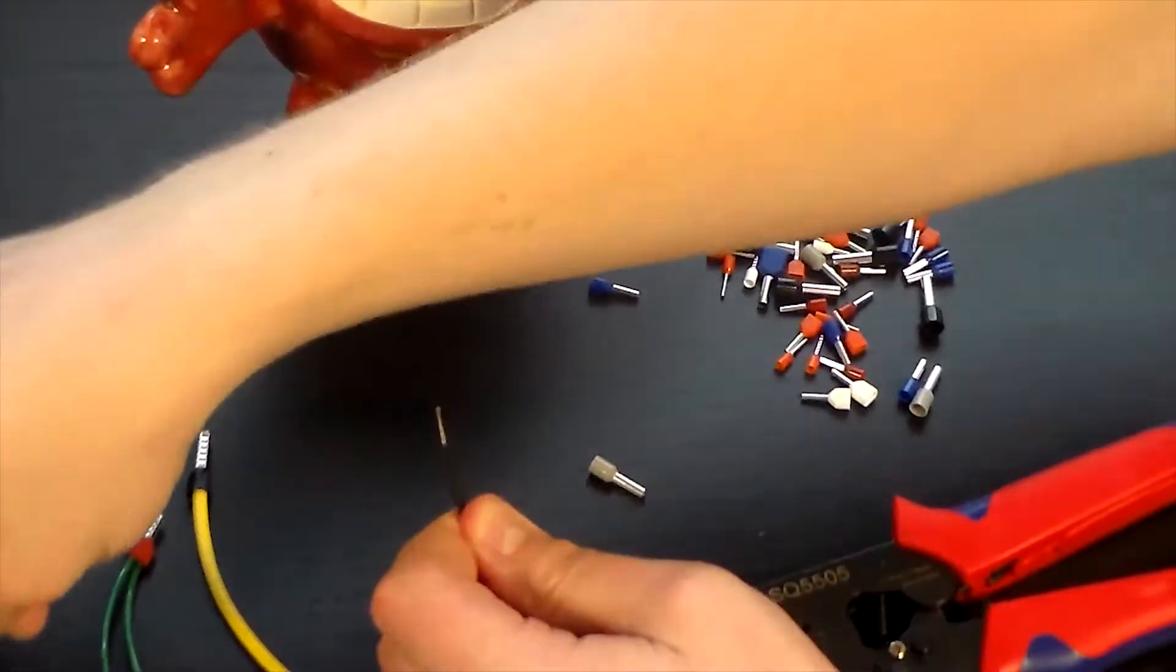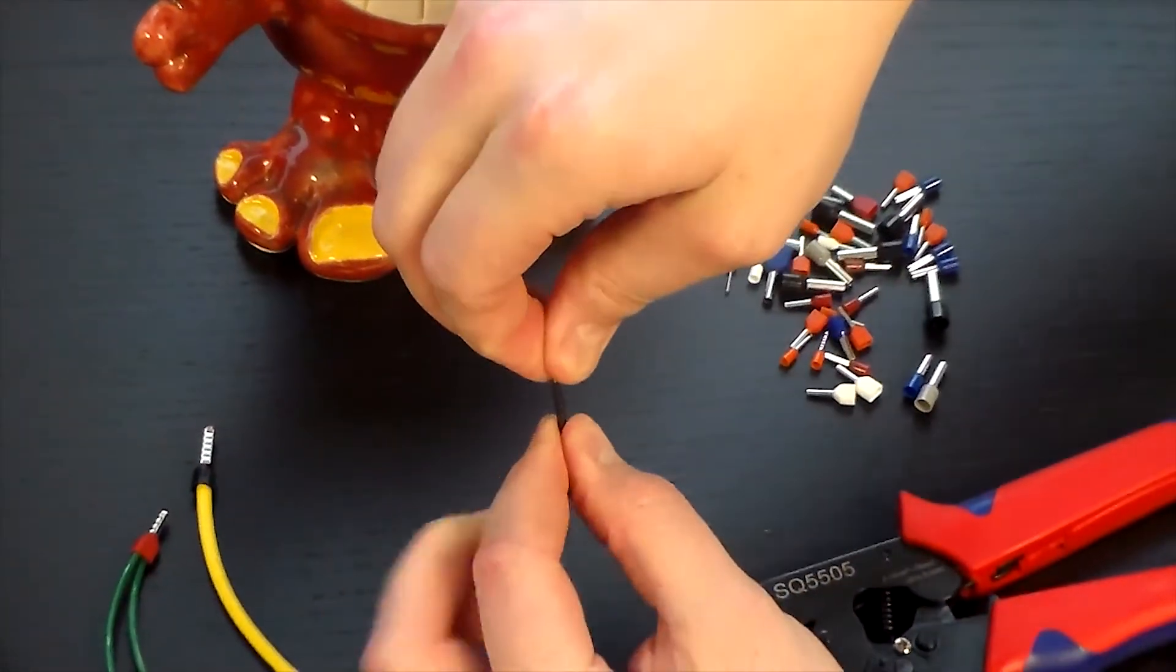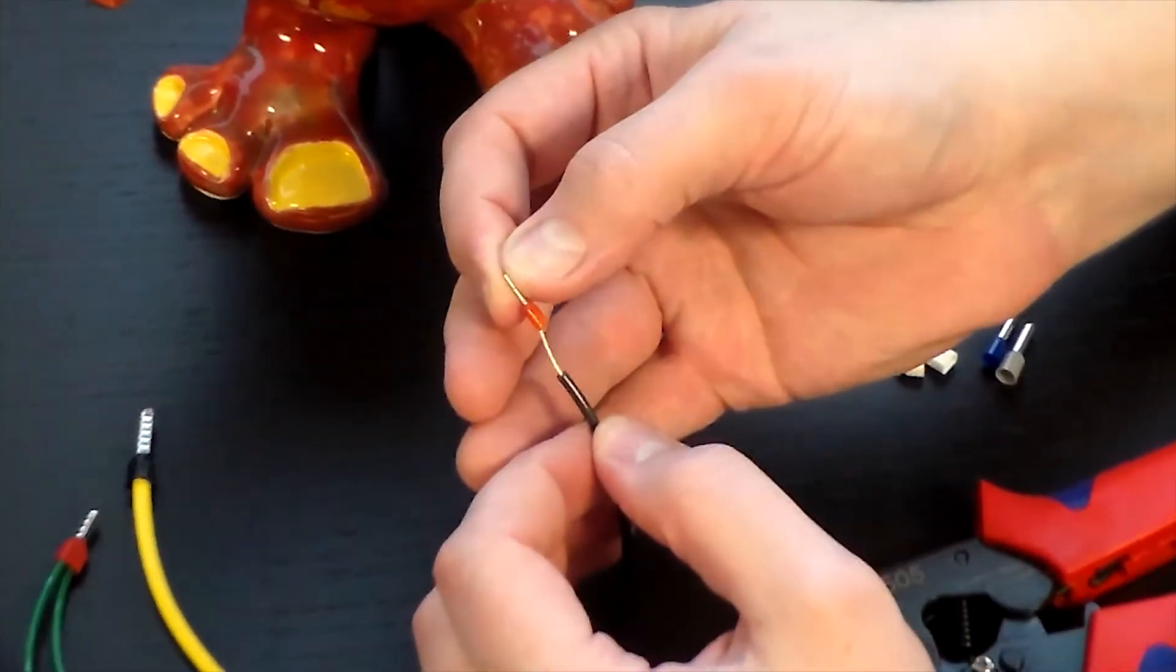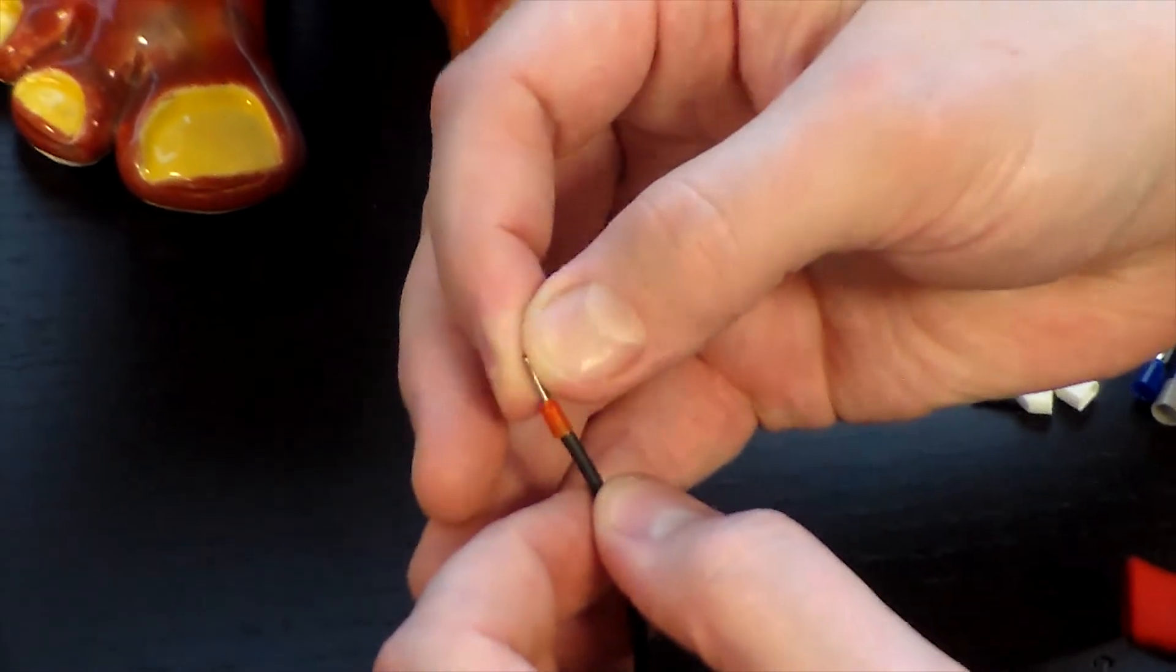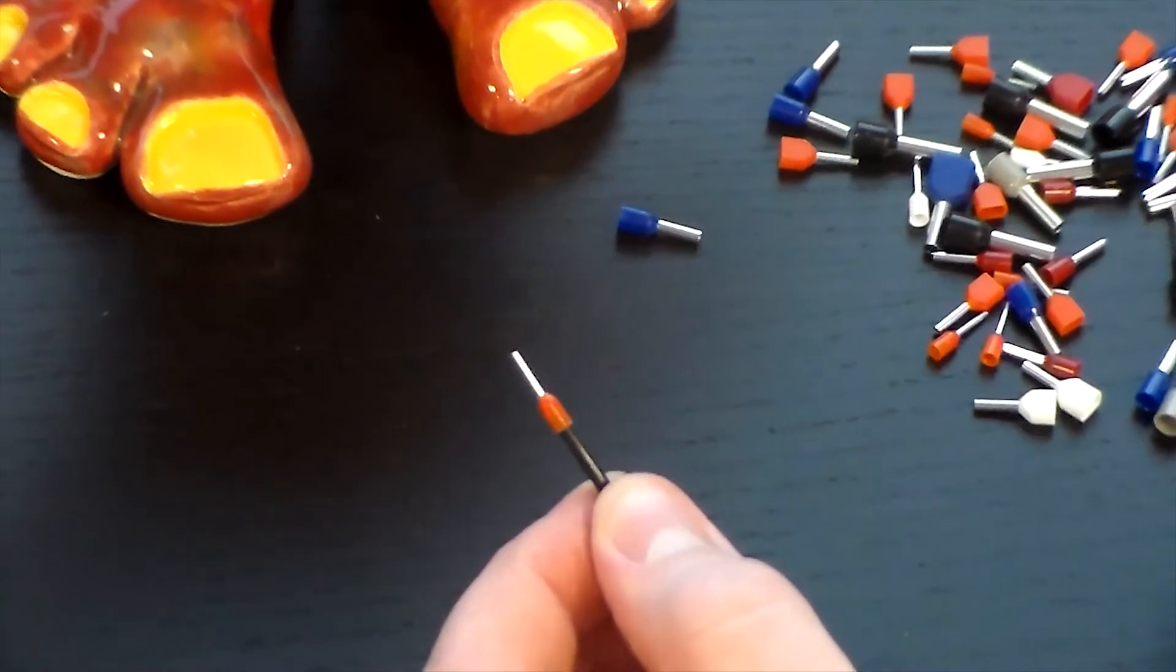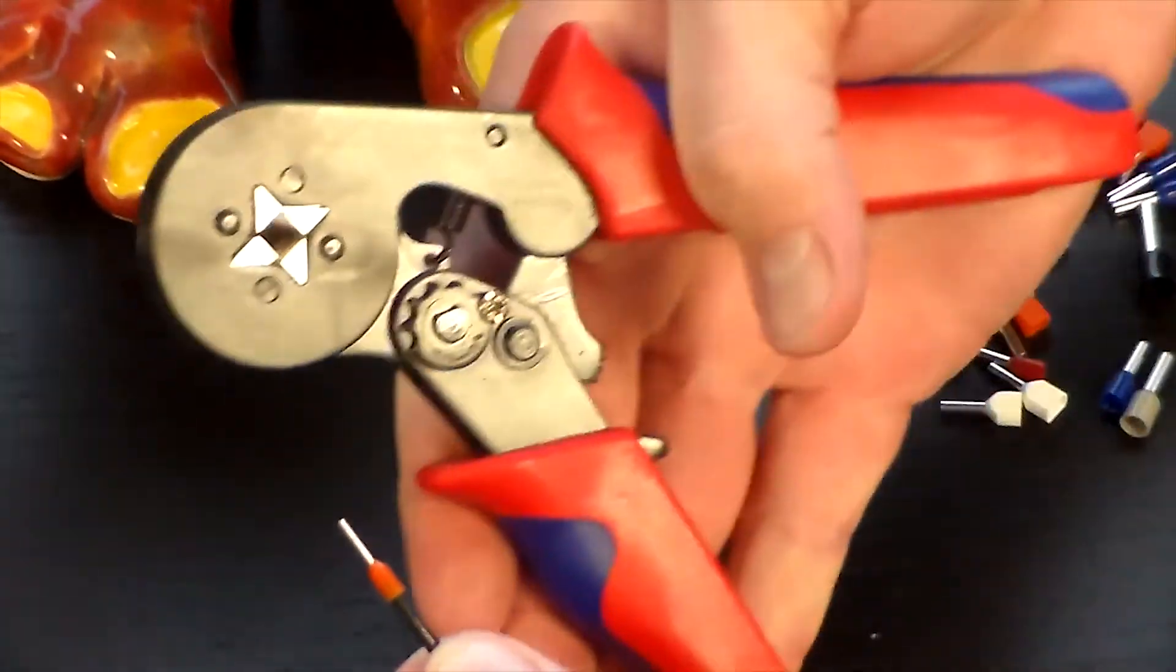So finally we have the 22-gauge wire with our 22-gauge orange ferrules, which is part number AW05008. Slip that over top. Very nicely. Fits perfectly over the insulation. Let me find that tool out of frame. There it is.